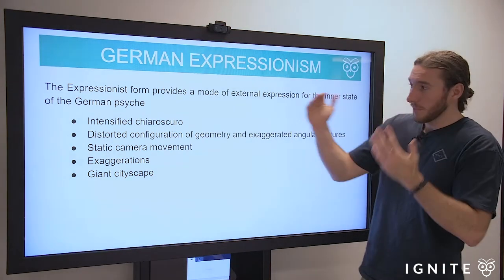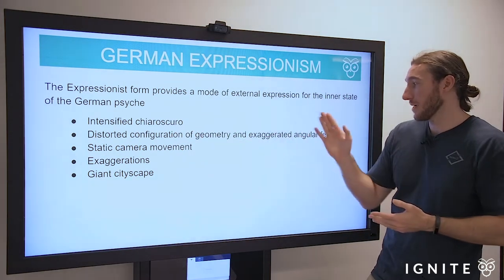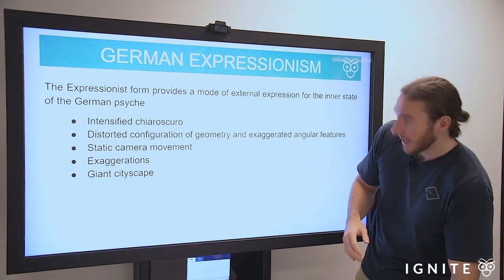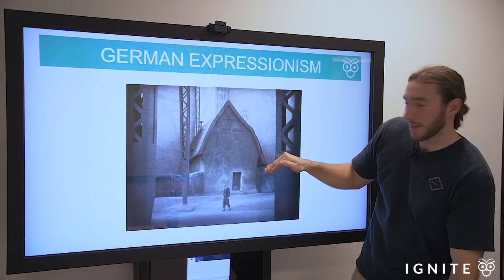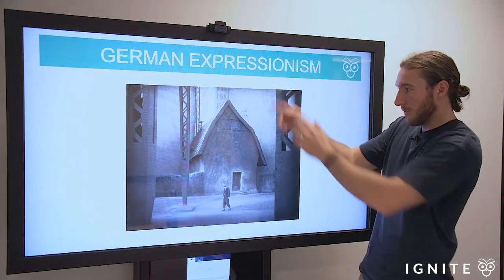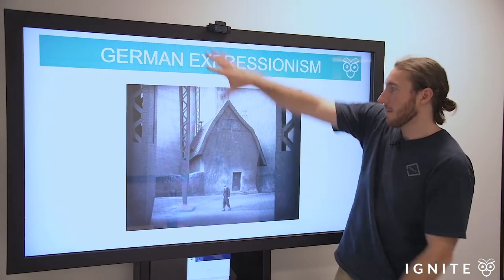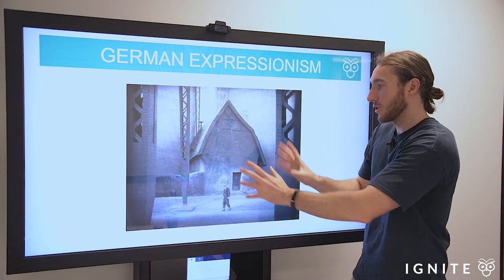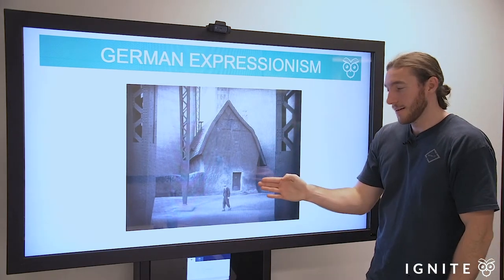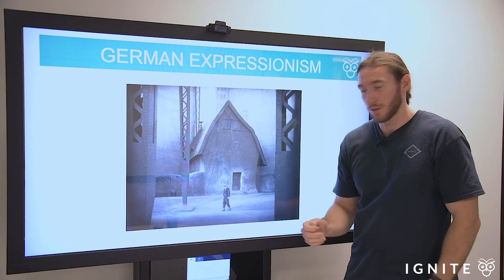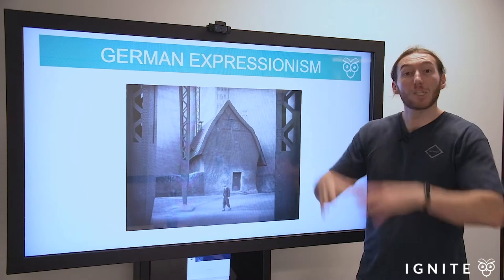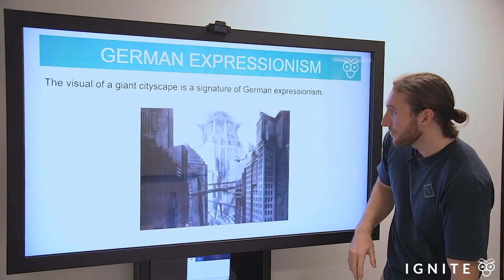What else do we have? We have distorted configuration of geometry and exaggerated angular features. There is a scene where you see the geometric figures — you can see how distorted that house is. There's a normal house and then this massive roof, and then this tiny individual. We have these big, disproportionately large visual macro structures. And in this case, that's actually to heighten the insignificance of the individual. Look how small this man looks here — this worker in the worker city — compared to this disproportionately large house.